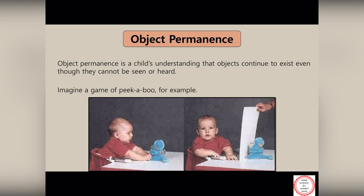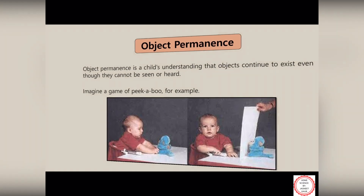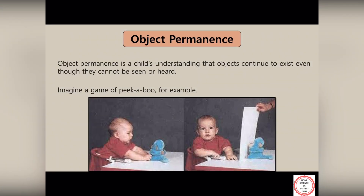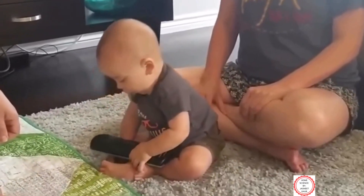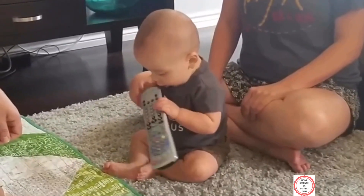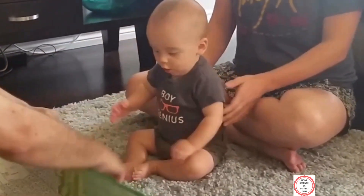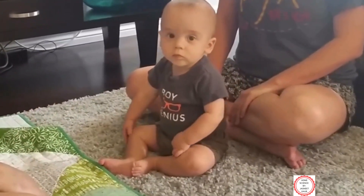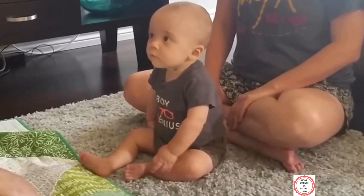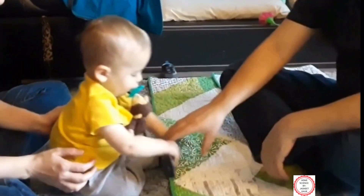The last and most important concept in this whole sensory motor stage is object permanence. Object permanence is the understanding that objects continue to exist even though they are out of sight or cannot be heard. For example, when a parent hides a remote while playing with a baby, the baby is unable to find it. This lack of ability to search for hidden objects at other places is known as absence of object permanence.